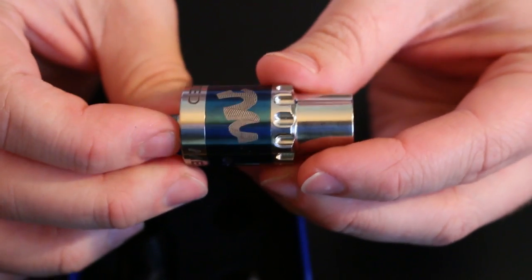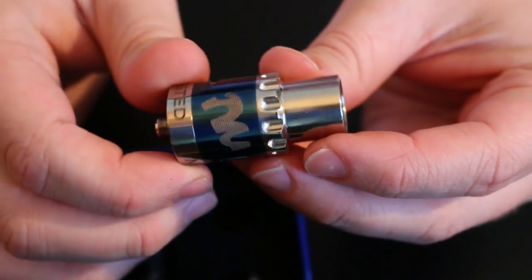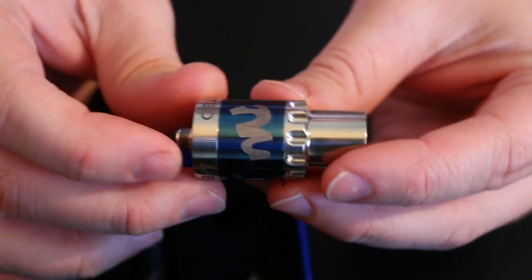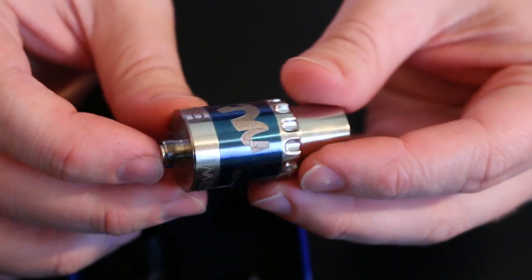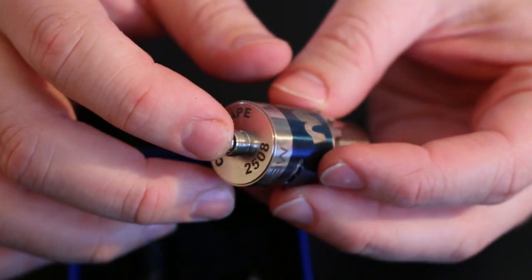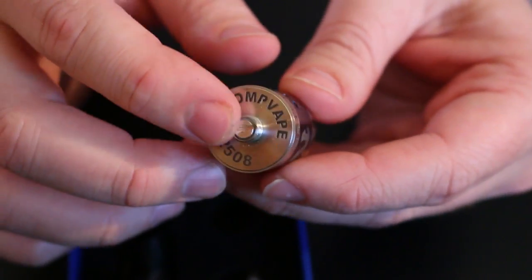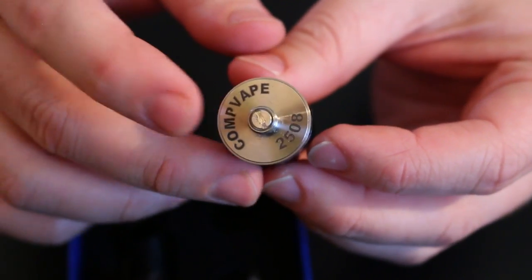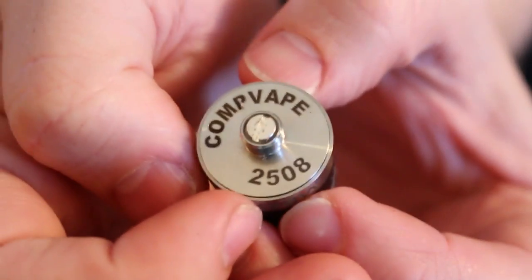So this retails at about $59.99 at twistedmesses.com and as far as the build it is 304 stainless steel and the copper center post on the bottom, the copper contact is actually, it's not copper. It is silver plated brass. Yes. So I'm just so used to things these days coming out with copper, you know, copperness.